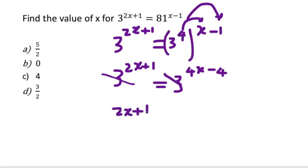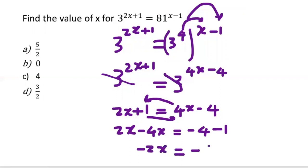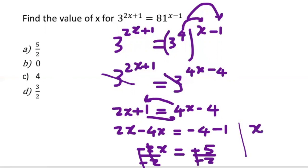Since the bases are the same, we drop the base and equate the exponents: two X plus one equals four X minus four. Grouping like terms: carry positive one over the equals sign to become negative one on the right, and bring four X to the left. So two X minus four X is negative two X, and negative four minus one is negative five. Dividing both sides by negative two gives X equals five over two.